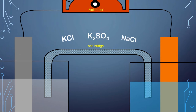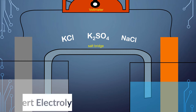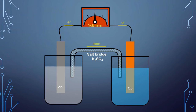A salt bridge is an inverted U-shaped tube containing a concentrated solution of an inert electrolyte like potassium chloride, potassium nitrate, sodium chloride, or potassium sulfate. Here, inert electrolyte means that the ions contained in the electrolyte of the salt bridge neither get discharged nor react with the ions of the half cells. The function of the salt bridge is to allow the movement of ions from one solution to the other without mixing of the two solutions.